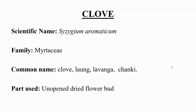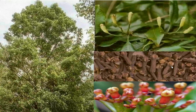Clove belongs to the family Myrtaceae. The common names are clove, lavanga, and chunky. The part used is the unopened aromatic dried flower bud. It is one of the most ancient and valuable spices of the orient and holds a unique position in the international spice trade. The term clove is derived from the French word 'clou' and the English word 'cloud', both meaning nail, based on the likeness of the flower bud to a broad-headed nail.